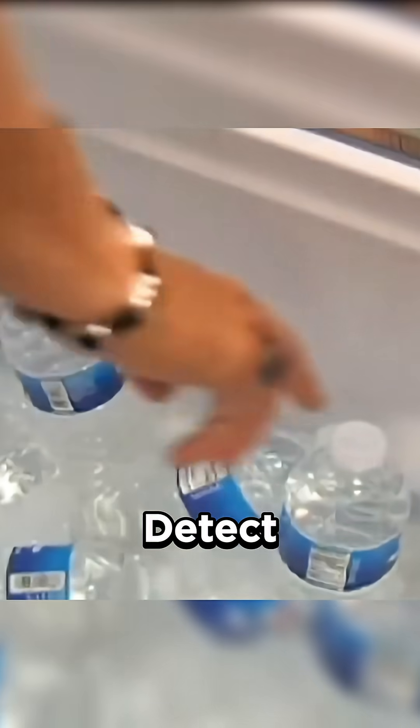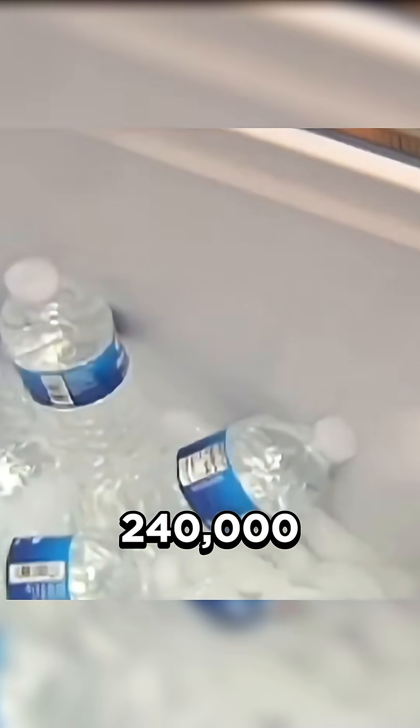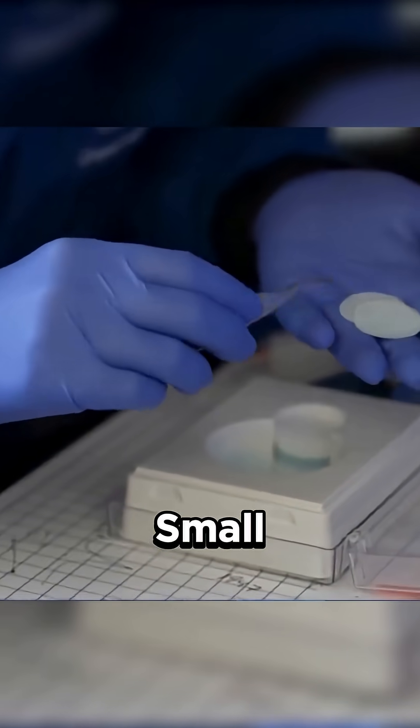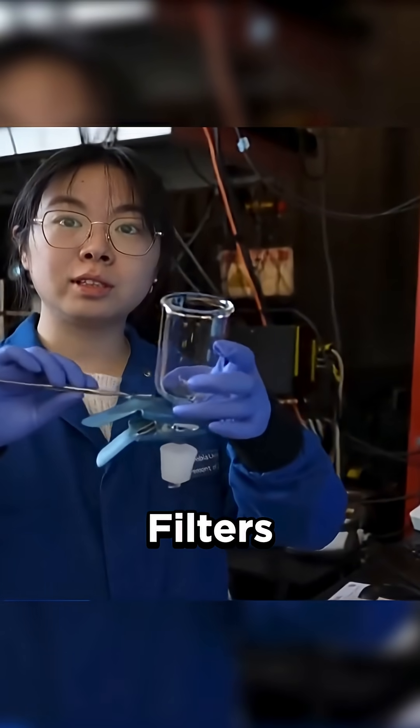Studies detect up to 240,000 nanoplastics per liter in some bottled water, particles so small they pass through your filters.